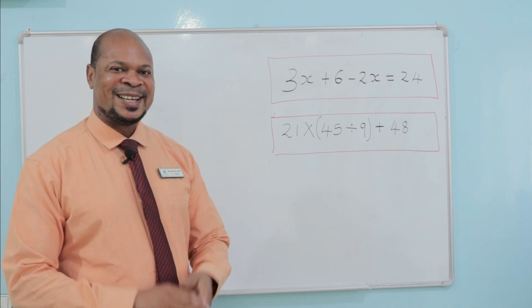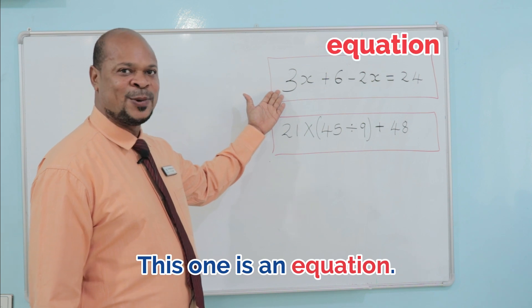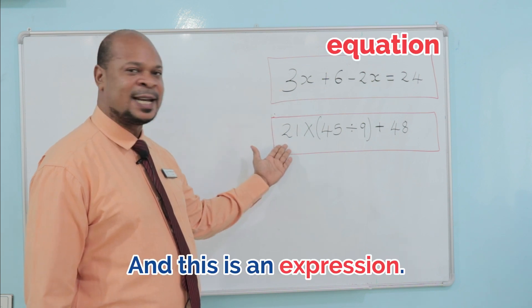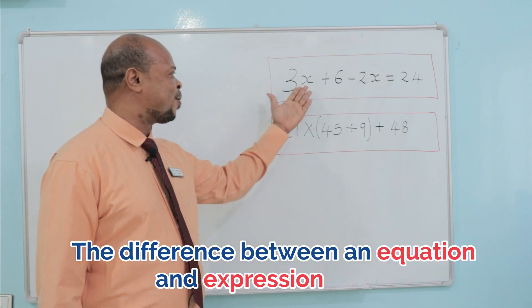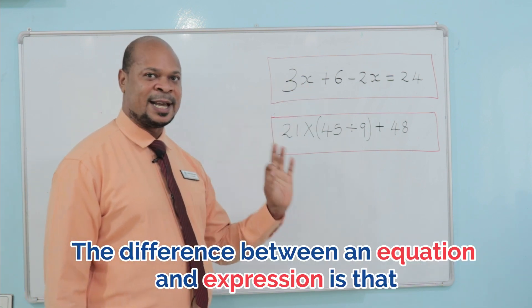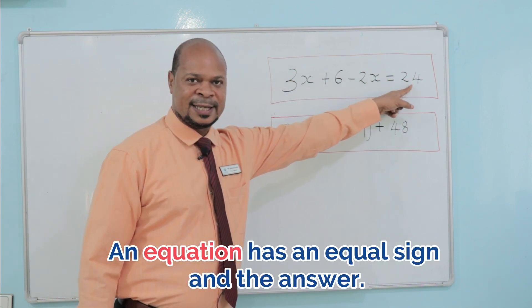Now, let's see what we have here. This one is an equation, and this is an expression. The difference between an equation and an expression is that an equation has an equal sign and the answer.